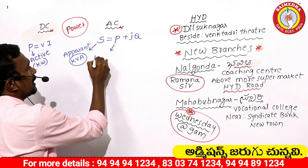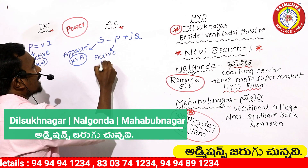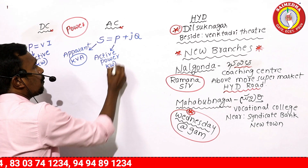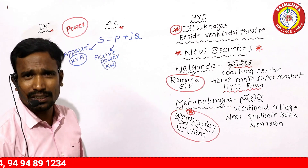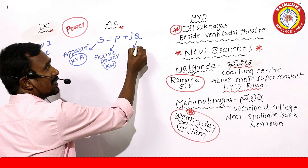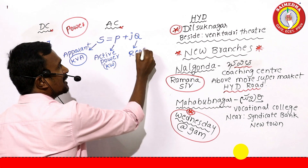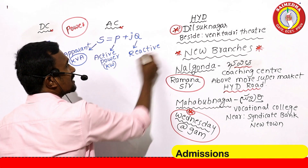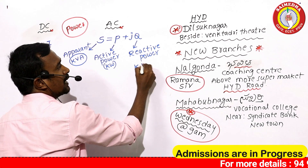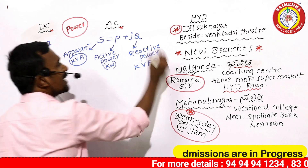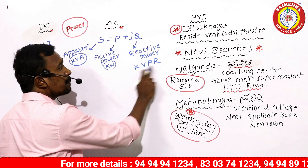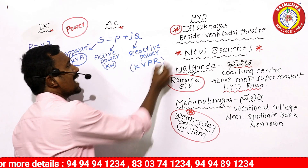P is active power. Active power is given in watts or kilowatts. Q is reactive power. Reactive power is given in volt ampere reactive — VAR or kilo volt ampere reactive (KVAR).